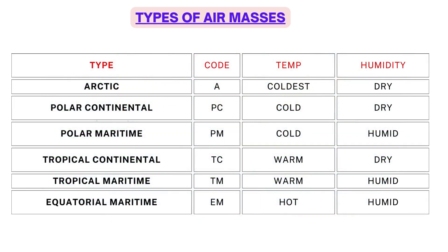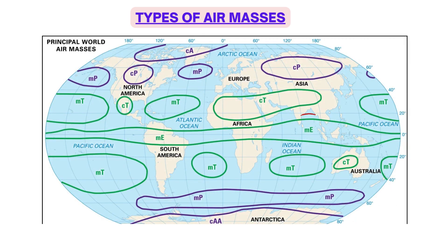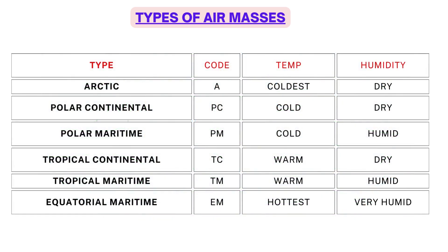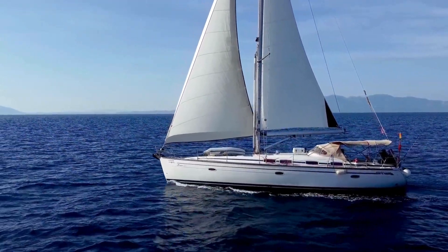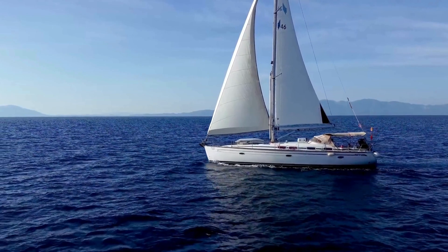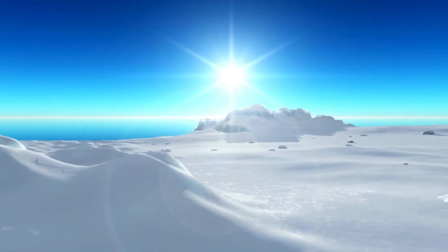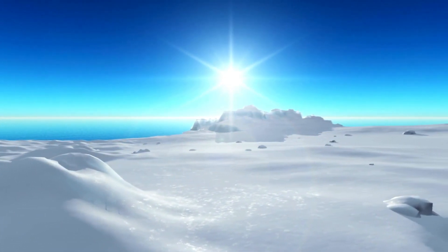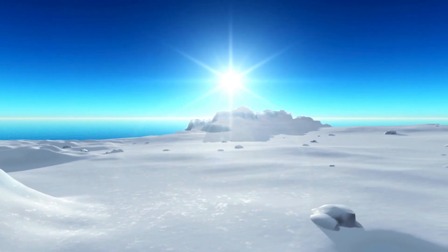The last is Equatorial Maritime, which originates over the equator over sea. Since there are no significant land masses along the equator, it is only maritime — the hottest air mass with the highest humidity. So maritime air masses will have higher humidity compared to continental, and temperature-wise the arctic is the coldest and the equatorial is the hottest.